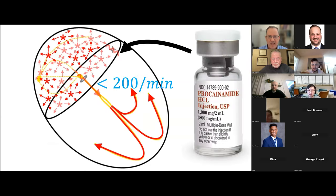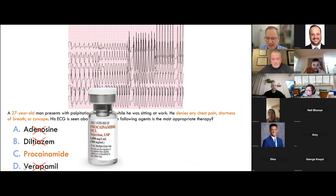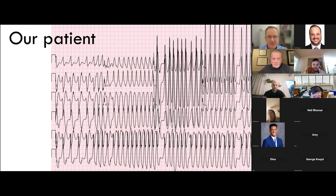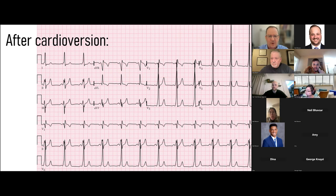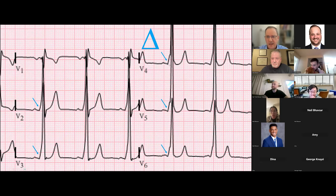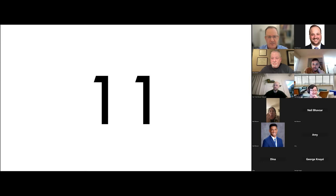The medication to treat AFib with WPW is procainamide. Procainamide doesn't block the AV node — it may actually slightly speed conduction through the AV node — and it blocks conduction down the accessory pathway. For a relatively stable patient with AFib and WPW and no chest pain, shortness of breath, or syncope, you can give procainamide. After cardioversion, the post-cardioversion ECG reveals a delta wave with a short PR interval in the precordial leads, confirming the patient has an underlying accessory pathway — WPW.